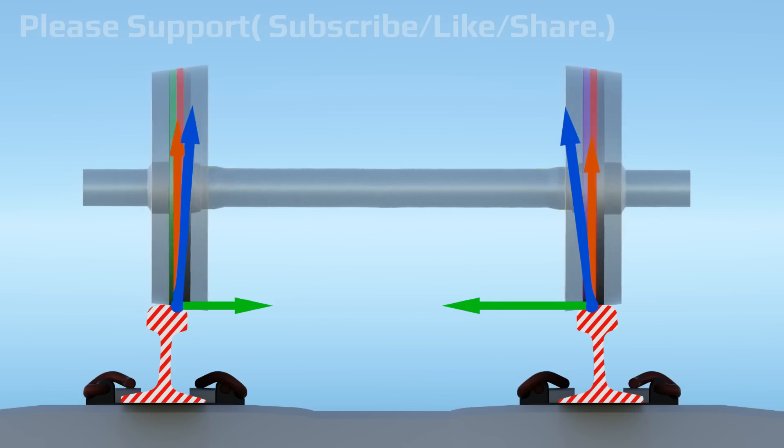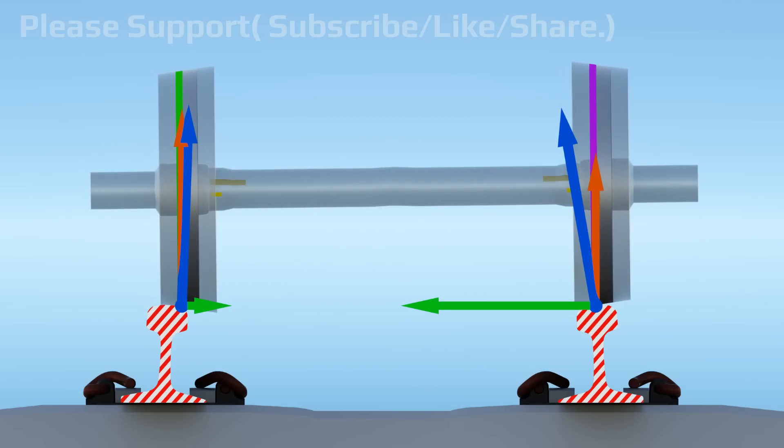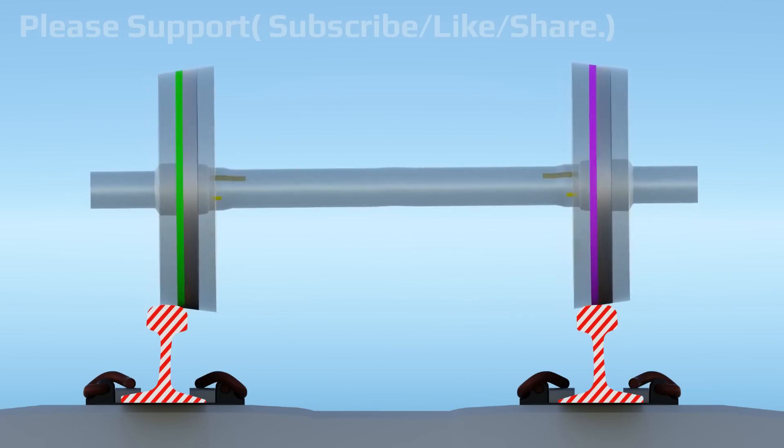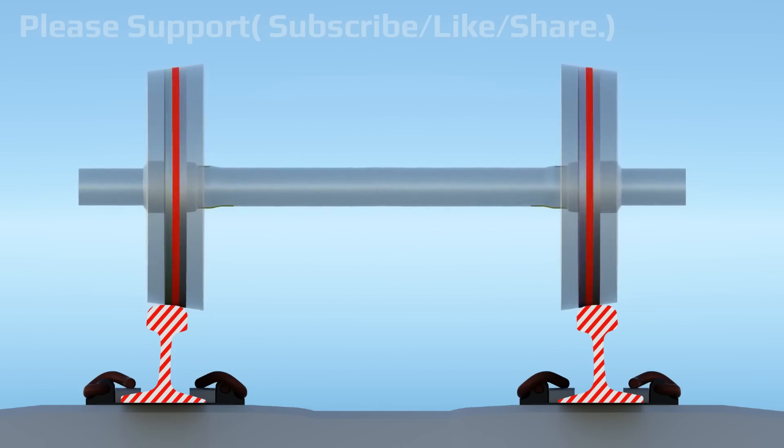In opposite, if the wheel set slightly moves to the right side, then horizontal reaction force on the right side wheel will increase. This extra force will push the wheel set back to normal position while rolling on the rails. This way a wheel set adjusts its position while rolling on the tracks.